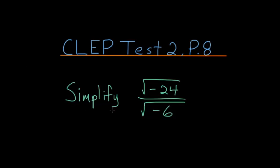This problem asks us to simplify the square root of negative 24 divided by the square root of negative 6. What we can notice is that 24 and 6 share a common factor of 6.